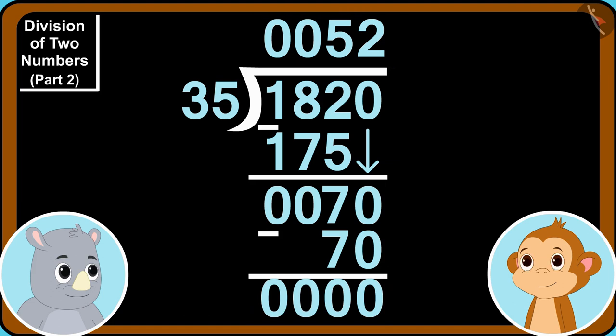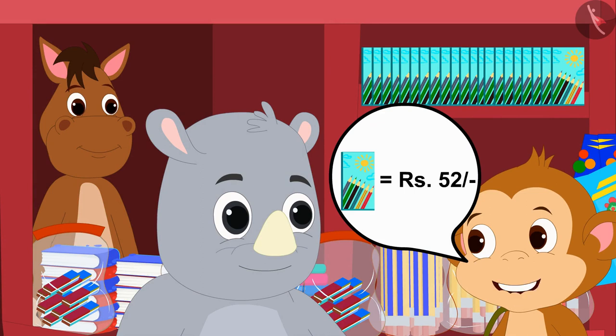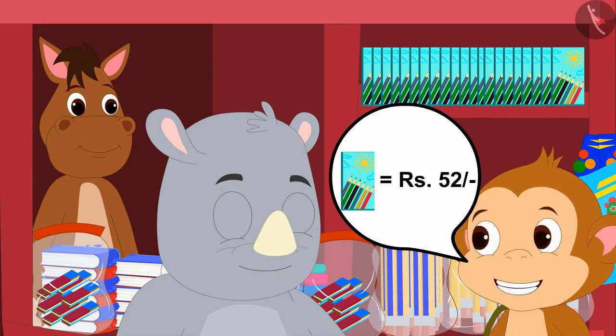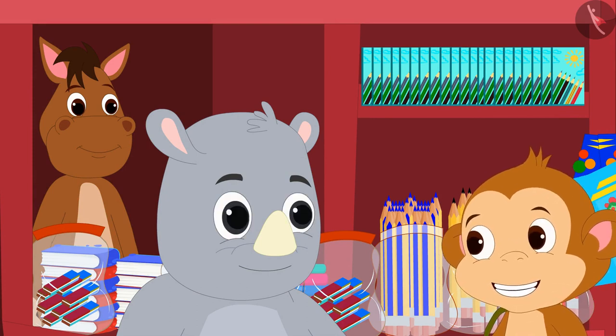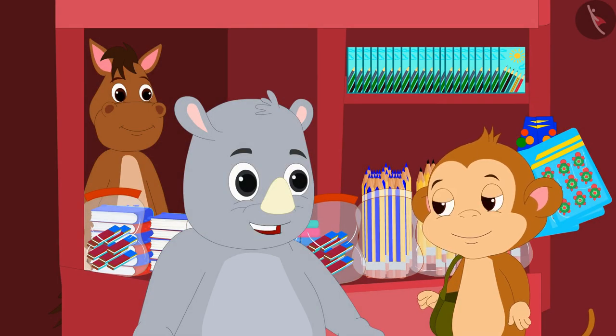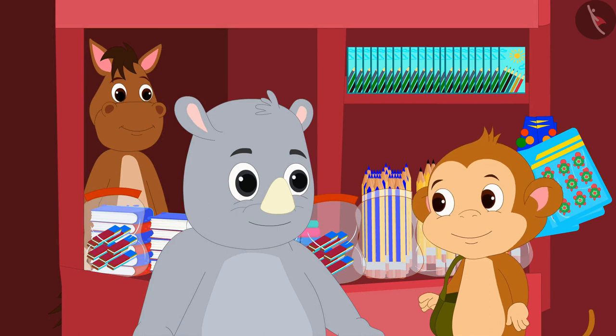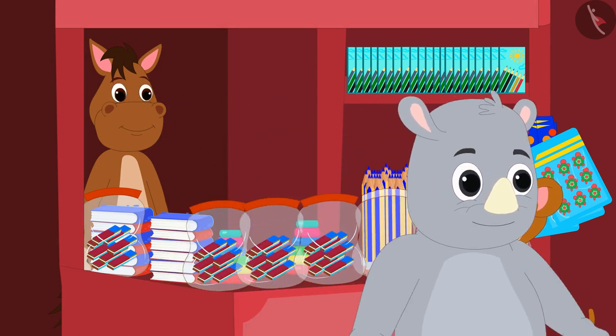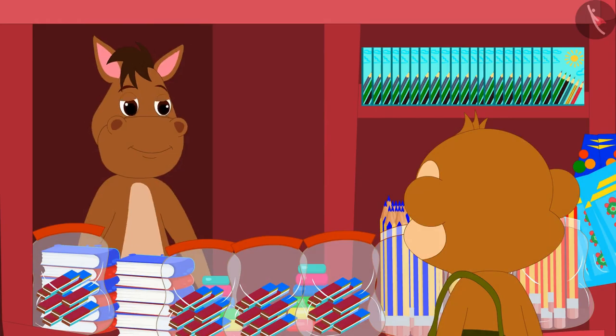Gaggu told Babban. Oh good. The cost of one colour pencil box is 52 rupees. Babban told Gaggu excitedly. Yes Babban. See how easy it is. Saying that Gaggu left from there.